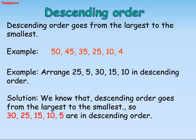Example. Arrange 25, 5, 30, 15, 10 in descending order. Solution. We know that descending order goes from the largest to the smallest. So, 30, 25, 15, 10, 5 are in descending order.